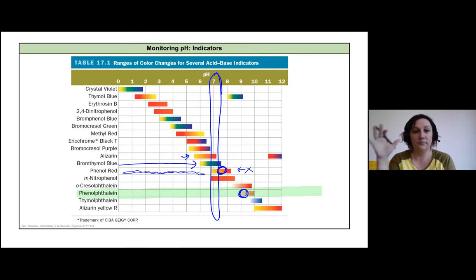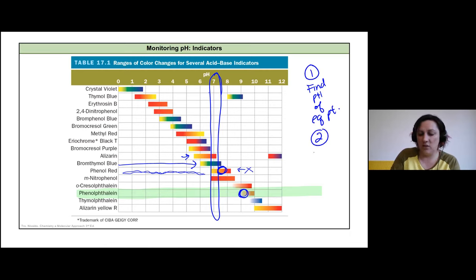Anyway, so these are our indicators. You can come back to this chart and review it. A lot of our problems that are like pick an indicator, you'll come back to this chart to decide once you know the pH of the equivalence point. So I'll typically find the pH of the equivalence point first, and then I'll use that to choose an indicator with an appropriate endpoint.